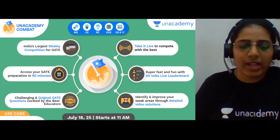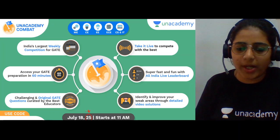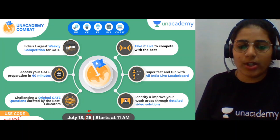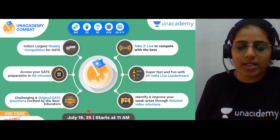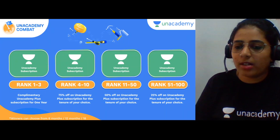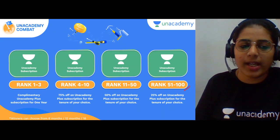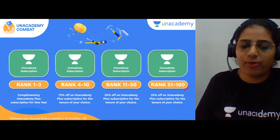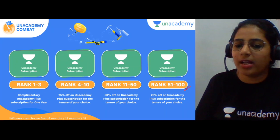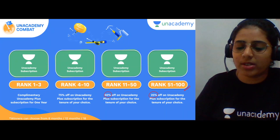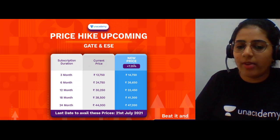There is a ComeBack competition coming on 21st July at 11 AM. You can use the code ZOYA05 to join. It is the largest weekly competition for the GATE syllabus. If you are in the top 100 ranks, you will get subscription discounts: rank 1–3 gets 100% off, rank 4–10 gets 75% off, rank 11–50 gets 50% off, and rank 51–100 gets 25% off.